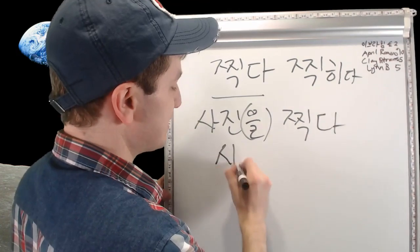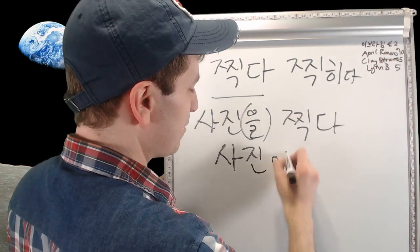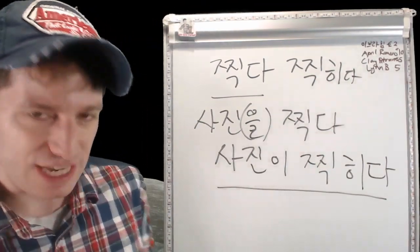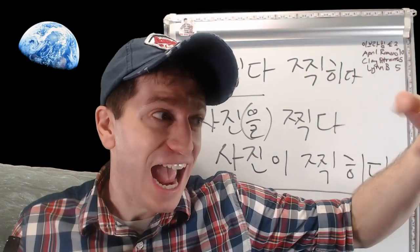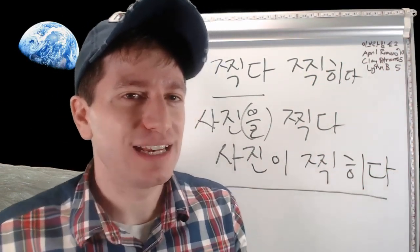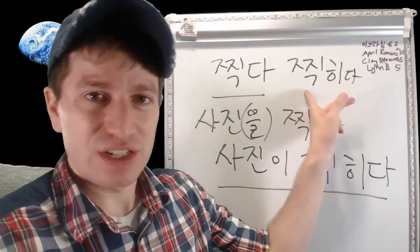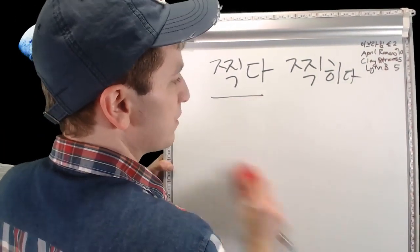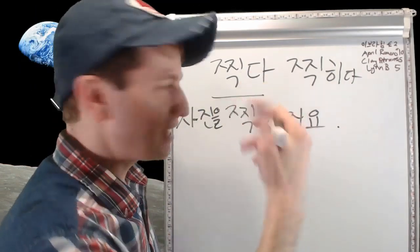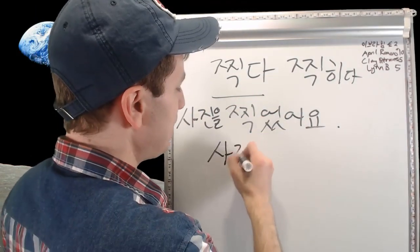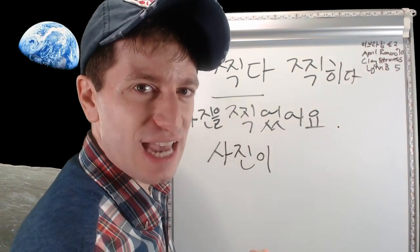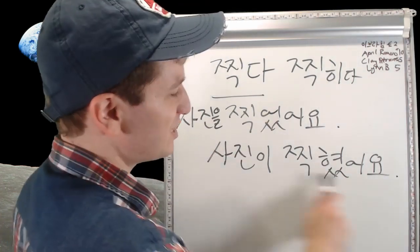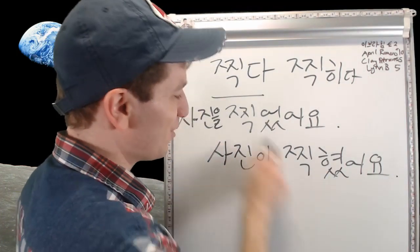찍다 means 'to take a photo' — 사진을 찍다. If you want to say 'a photo was taken,' you can say 찍혔어요. For example, if you're with friends taking a selfie, your friend can ask 찍었어요? (Did you take it?) or 찍혔어요? (Was it taken?) — both are fine but used slightly differently. If you say 사진이 찍혔어요, you're emphasizing the photo being captured — like when a traffic camera catches you speeding: 사진이 찍혔어요 (My photo got taken).